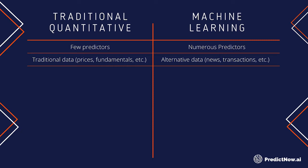Traditional quant models have the advantage of being intuitive, but that is also a disadvantage — because if it is intuitive, you are unlikely to be the only trader who has that intuition. None of us are so genius that only we can see that the market goes up when earnings are good, or when the Fed decreases interest rates. So if there's an intuition behind your trading idea, most likely a hundred or a thousand other people also have the same intuition. They will all implement it slightly differently, but the edge is going to be eroded because it's easy to replicate.